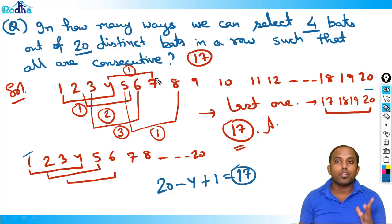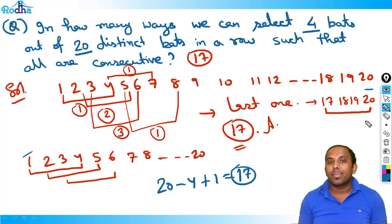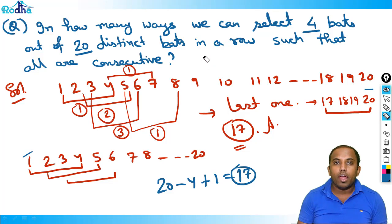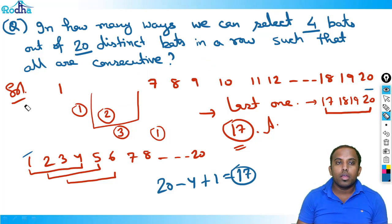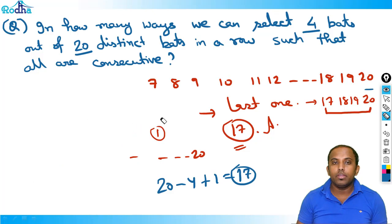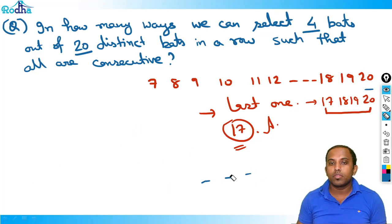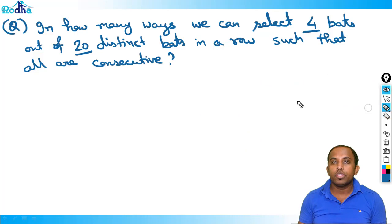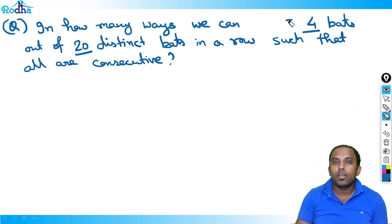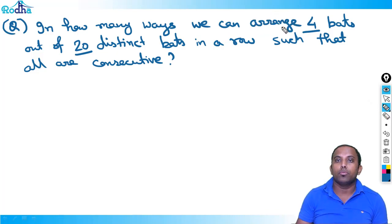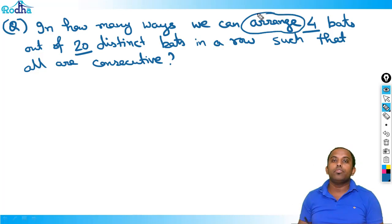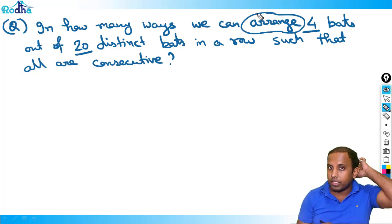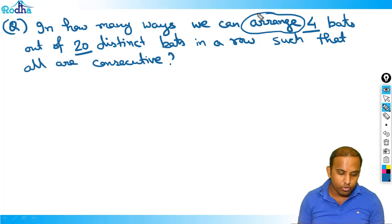So in blocks of four — it's a bit of a trick question actually. Now let me change this question here. In how many ways can we arrange four bats out of 20 distinct bats in a row such that all are consecutive?